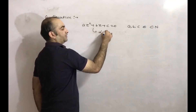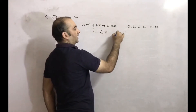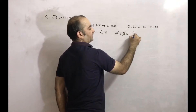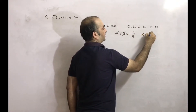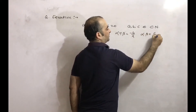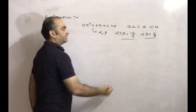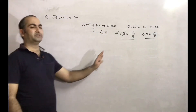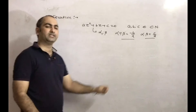If the roots of this equation are alpha and beta, then alpha + beta = -b/a and alpha × beta = c/a. So here we can do the same things as in a standard quadratic equation.